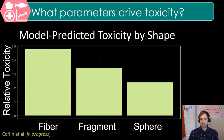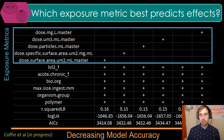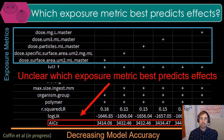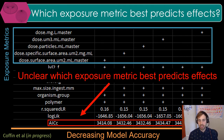Partial dependence analysis with our model suggests that fibers are indeed more toxic than fragments and spheres, holding all other variables constant. We performed stepwise multiple regression to determine which exposure metric best correlates with effects, selecting one exposure metric for each model, one at a time. All of the best models included the parameters shown here with plus marks. There were no clear differences between the exposure metrics in predicting toxicity based on R-squared or Akaike's information criteria corrected for sample size, or AICC.